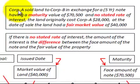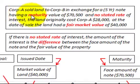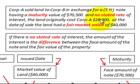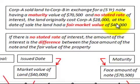Looking at our example: Corporation A sold land to Corporation B in exchange for a five-year note having a maturity value of seventy thousand five hundred dollars and no stated rate of interest. The land originally cost Corporation A twenty-eight thousand dollars, and at the date of sale the land had a fair market value of forty thousand dollars.